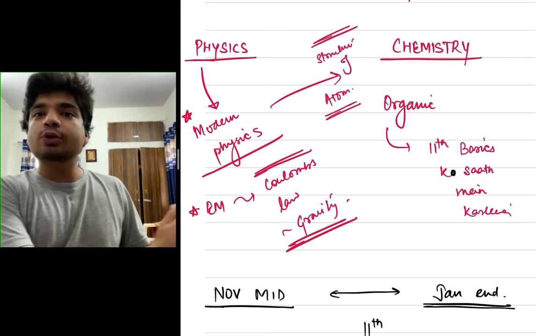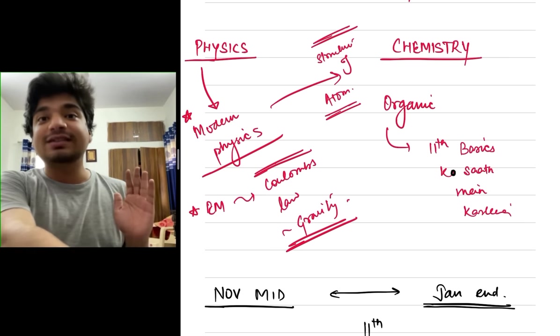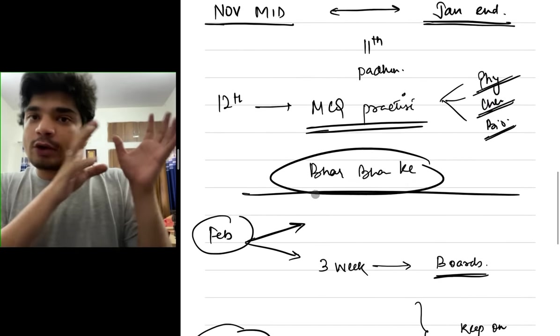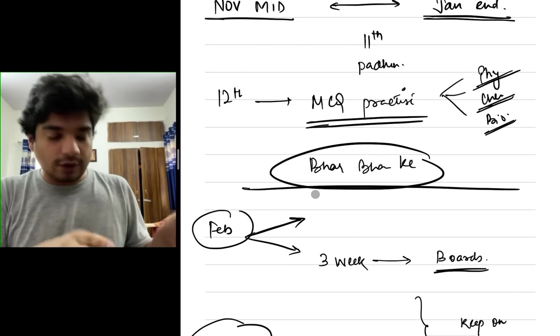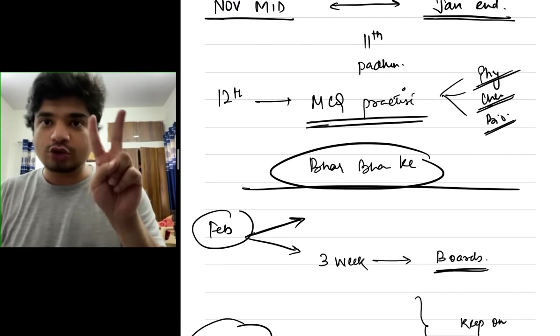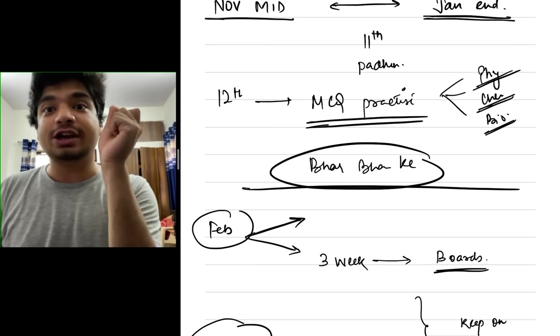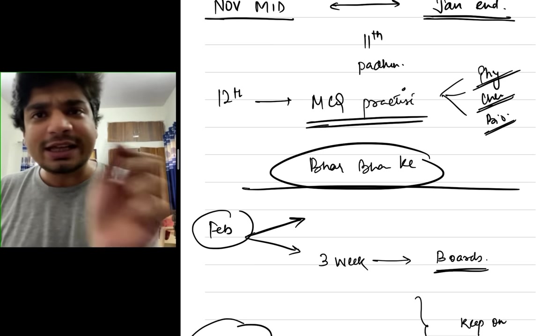The 11th portion will be covered even in these next 4 months August, September, October and November. When now from November mid to January mid or December beginning to January end those 2 months this is the time that you have to actually do your physics and chemistry again but this does not mean that you have to leave bio.